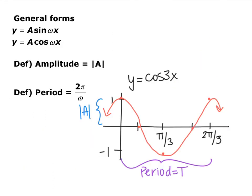The general forms of trig graphs are a·sine(ωx) or a·cosine(ωx). The value a is multiplied out in front and changes the range — for example, with 2 out in front, the range becomes 2 to negative 2. We call the distance from the x-axis to a highest or lowest point the amplitude, which equals the absolute value of a. The period is how long it takes for a cycle to repeat; for a standard sine or cosine, that's 2π.